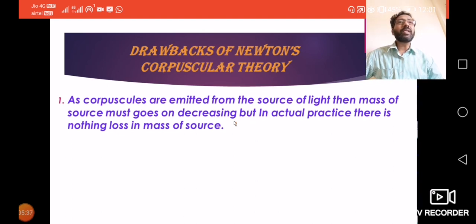Light particle se bana hua hai, and these particles are emitted from the source. If particles are emitted from the source, the mass of the source should decrease gradually. But in actual practice, there is no loss of mass of the source. This is the first drawback of this theory - light is not emitted in the form of particles.